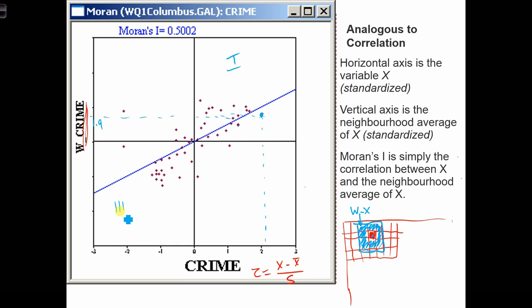Down here in quadrant 3, we've got neighborhoods, say over here, or they could be anywhere, they could be close by, but we have a neighborhood here, that's a low crime, and its neighbors are also low crime. So that's these points down here.